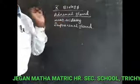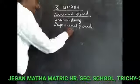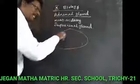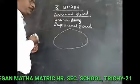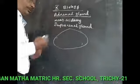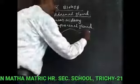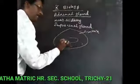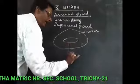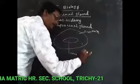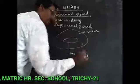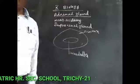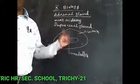The adrenal gland is almost triangular in shape and consists of two parts: the outer part is called the cortex, and the inner part is called the medulla. Structurally, they are different from each other.